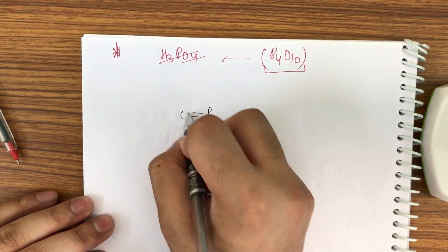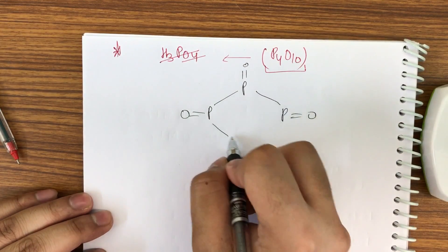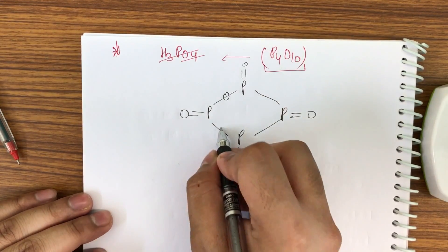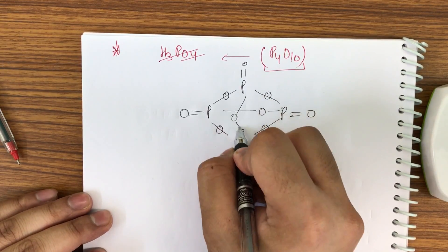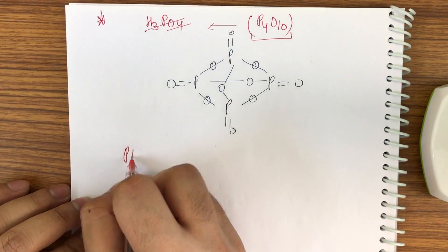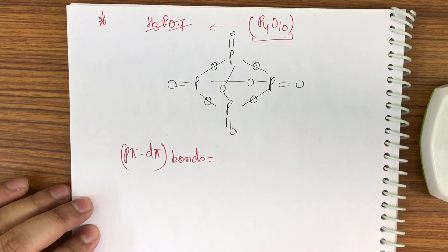Drawing the structure for it - the structure will be like this. P4O10.